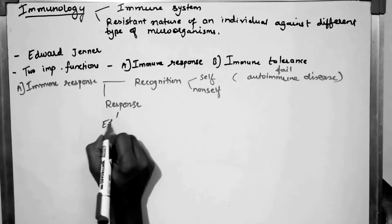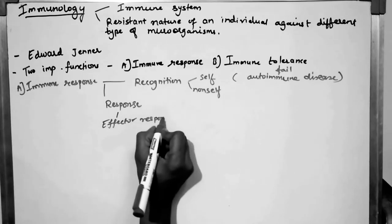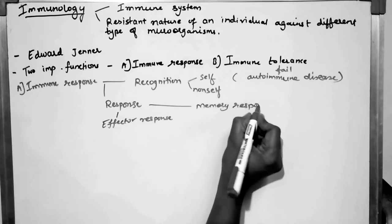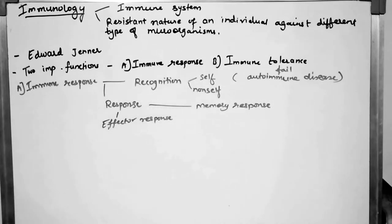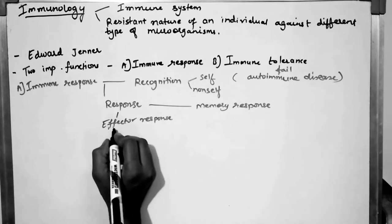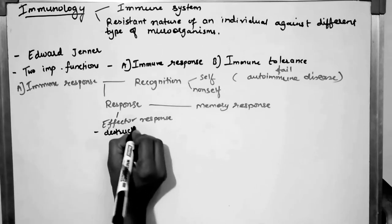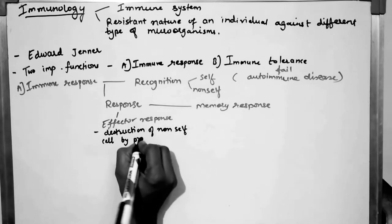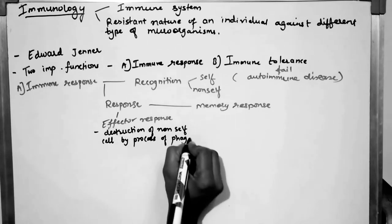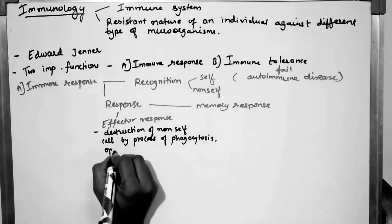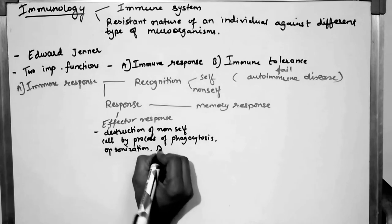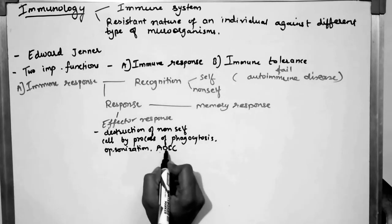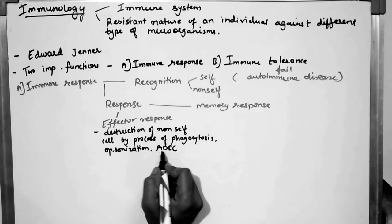The two types of responses are effector response and memory response. In the effector response, what effects does it have on the microorganism? It involves destruction of the non-self cell by processes such as phagocytosis, opsonization, or ADCC. Phagocytosis is the killing of the cell; opsonization is also a type of killing. ADCC means antibody-dependent cell-mediated cytotoxicity — it involves antibodies produced by our body.